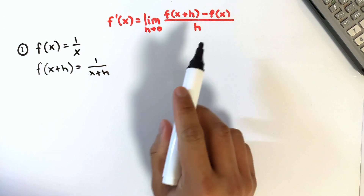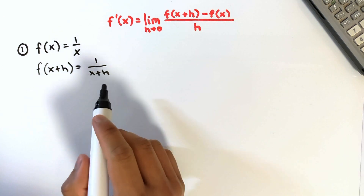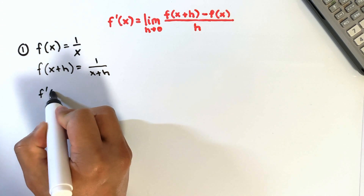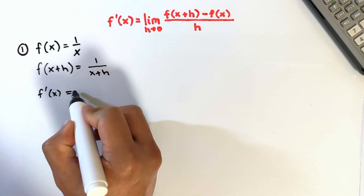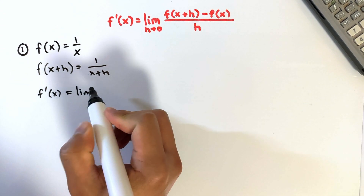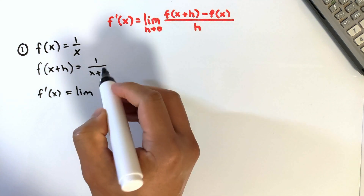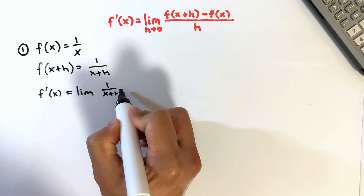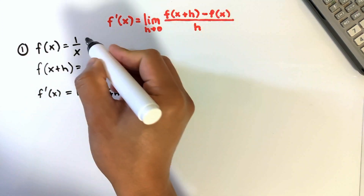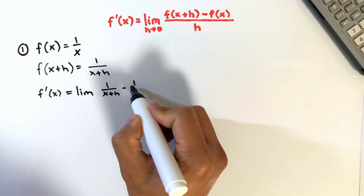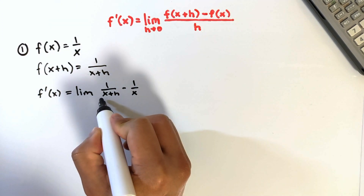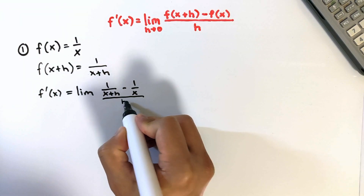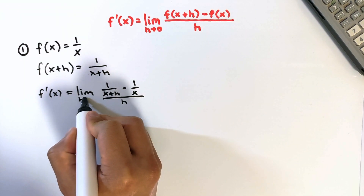Next, follow the formula and plug in the functions. So f prime of x is equal to the limit of f of x plus h, which is 1 over x plus h, minus f of x, which is 1 over x, all over h, as h approaches 0.